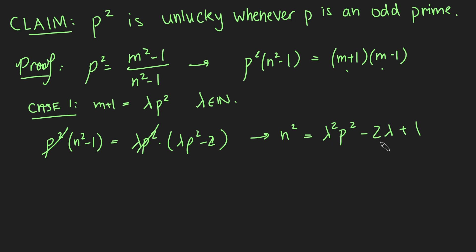So n squared equals this, and hopefully it's pretty clear to see. Because lambda is a positive integer, this thing here is definitely less than lambda squared p squared. And so just by square rooting both sides and noting that everything is positive, we get that n must be less than lambda p.